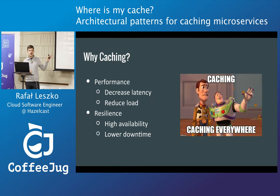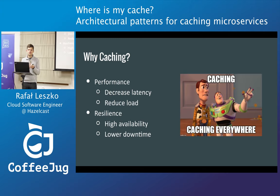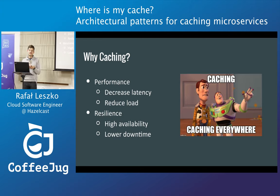So let's start — why do we do caching? Generally for two reasons. The first one is the most obvious: to improve the performance, to decrease the latency. You did some calculation or some long time-consuming operation — once you don't want to repeat it for the same parameters. Second one is resilience. This is a little less obvious, but you can think that even if your service is down, you can still provide the cached value, and sometimes it may be good enough for the user. For example, Amazon's recommendation service — you can have the old recommendation, not even knowing that the underlying service is down.